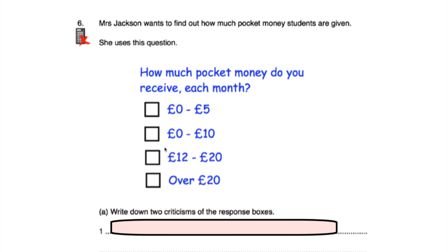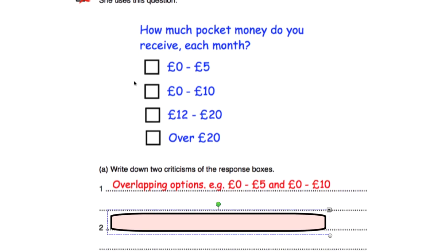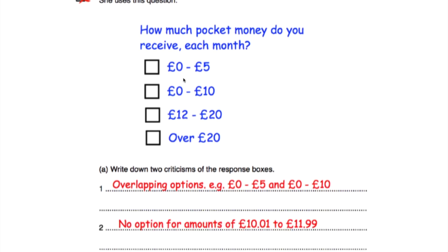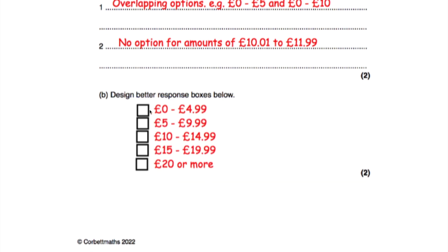If I received 11 pound worth of pocket money, there's no box to tick. So the two criticisms are: there's overlap in options (£0–£5 and £0–£10), and there's no option for amounts between £10.01 and £11.99. The better response boxes I've designed are: £0 to £4.99, £5 to £9.99, £10 to £14.99, £15 to £19.99, and £20 or more — with these, everyone can tick a box and there's no overlap.